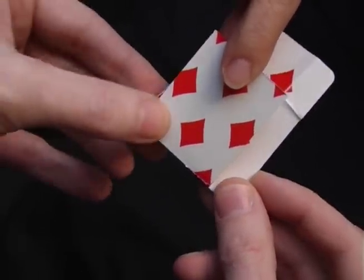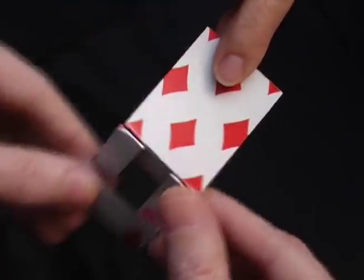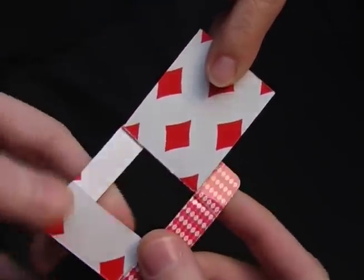To win the bet, fold this end under, then this side under and then the other side under and finally the back piece under. And when you unfold it, the whole thing will be face down.